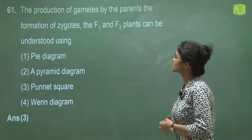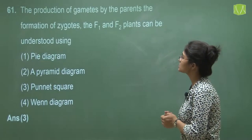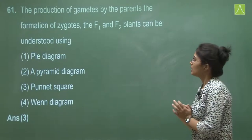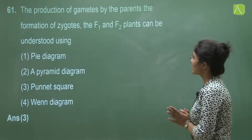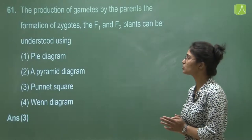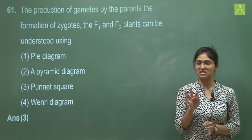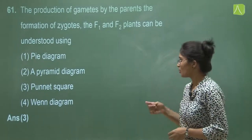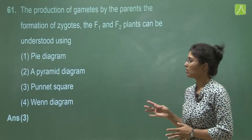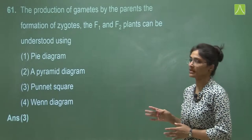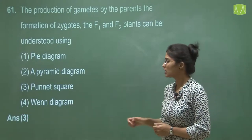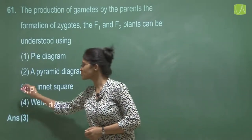Question 61 asks that to understand the production of gametes by the parents, the formation of zygotes, the F1 and F2 plants, we should use which tool. A Pi diagram — no. A pyramid diagram — no. A Punnett square — yes, this is the correct answer. A Venn diagram — no. So the answer is option three, Punnett square.